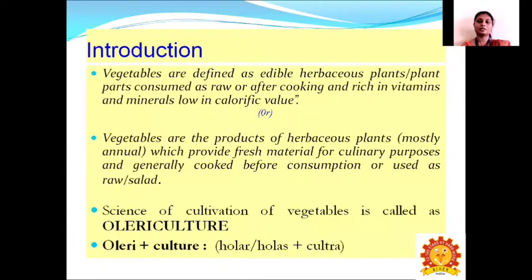The vegetables are defined as edible herbaceous plants or plant crops which can be consumed raw or after cooking, and which are rich in vitamins and minerals and low in calorific value. Vegetables are also defined as products of herbaceous plants, mostly annuals, which provide fresh material for culinary purposes, generally cooked for short consumption, or used raw as a salad. The science of cultivation of vegetables is called olericulture.